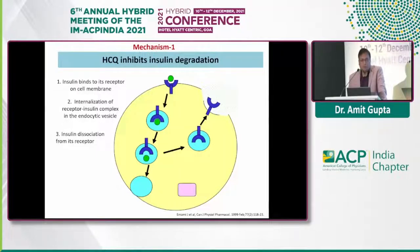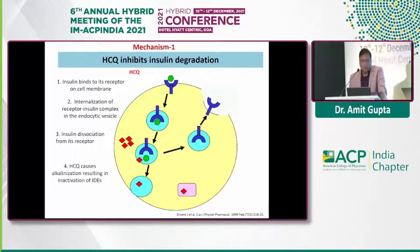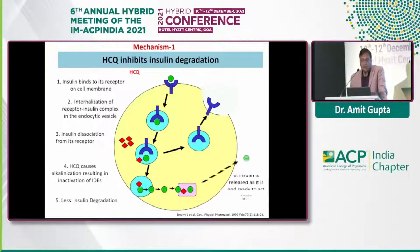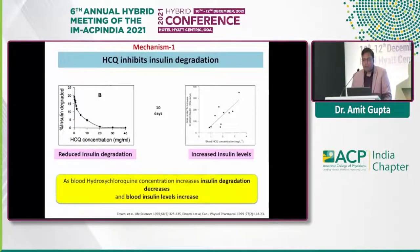How does hydroxychloroquine inhibit insulin degradation? Insulin binds to its receptor in the cell membrane, followed by internalization of the receptor-insulin complex into endocytic vesicles, where insulin dissociates from its receptor. HCQ causes alkalinization inside the cell, which results in inactivation of insulin-dependent endocytosis, leading to less insulin degradation and more free insulin available.